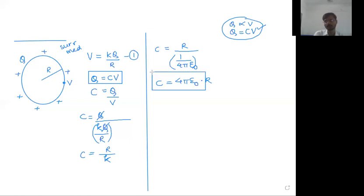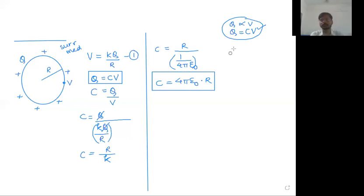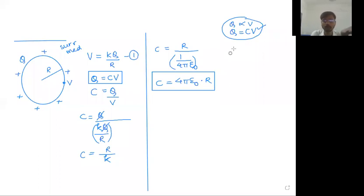This is the formula for the capacity of a spherical conductor. Reply in the chat box - clear and written. The capacity of a spherical conductor: Q equal to CV, C equal to Q upon V, Q value Q, V value KQ upon R, QQ cancel. Good.